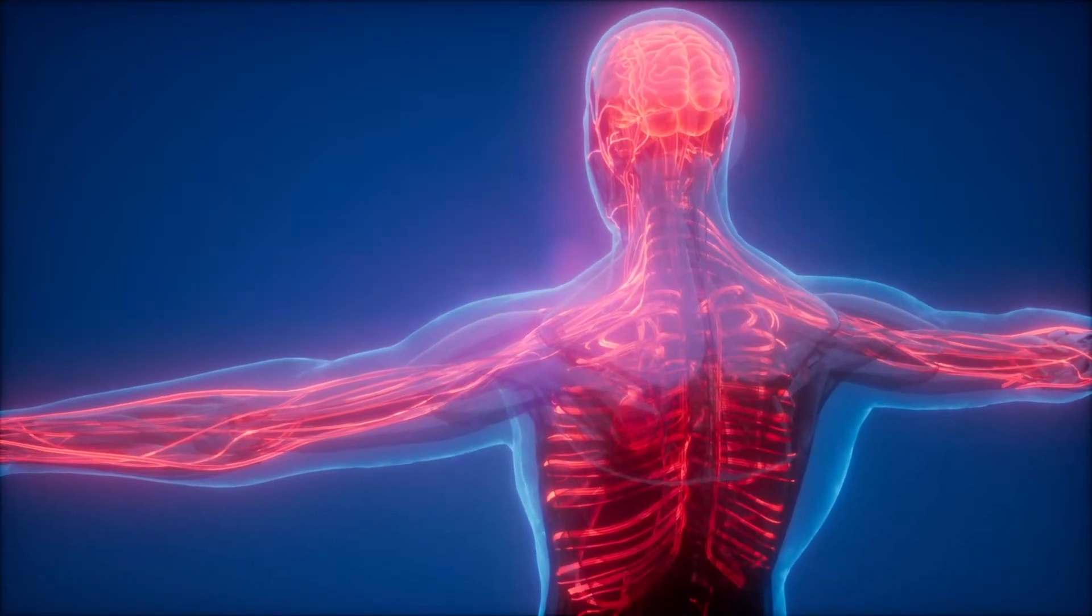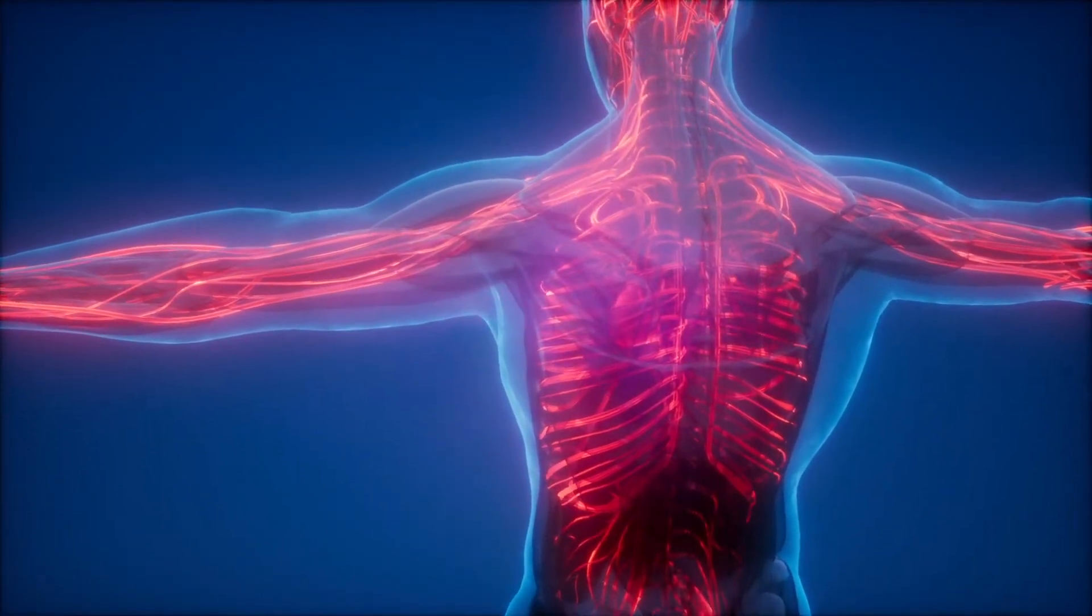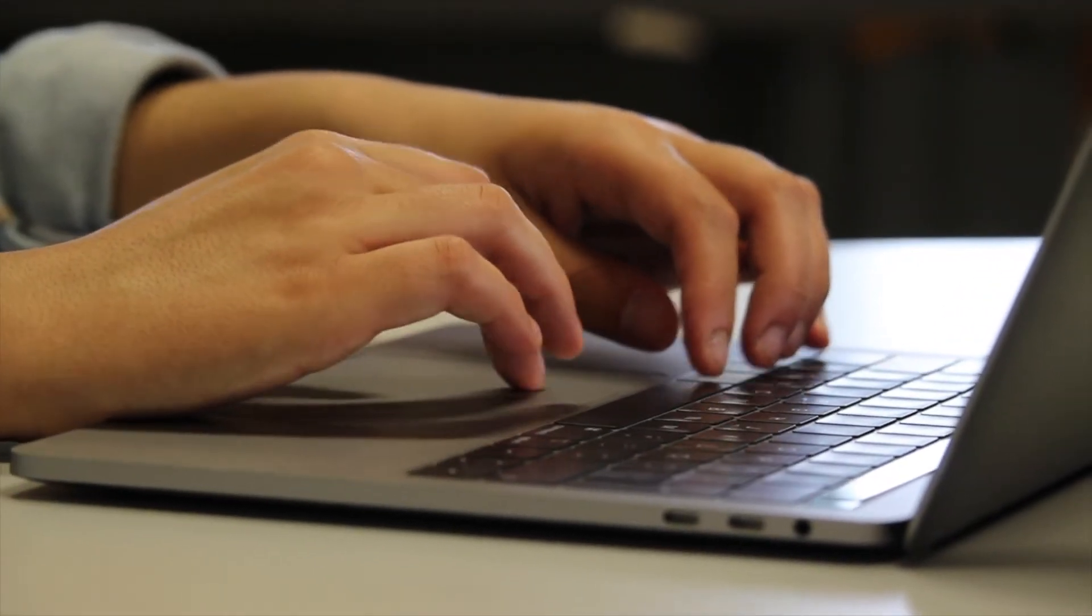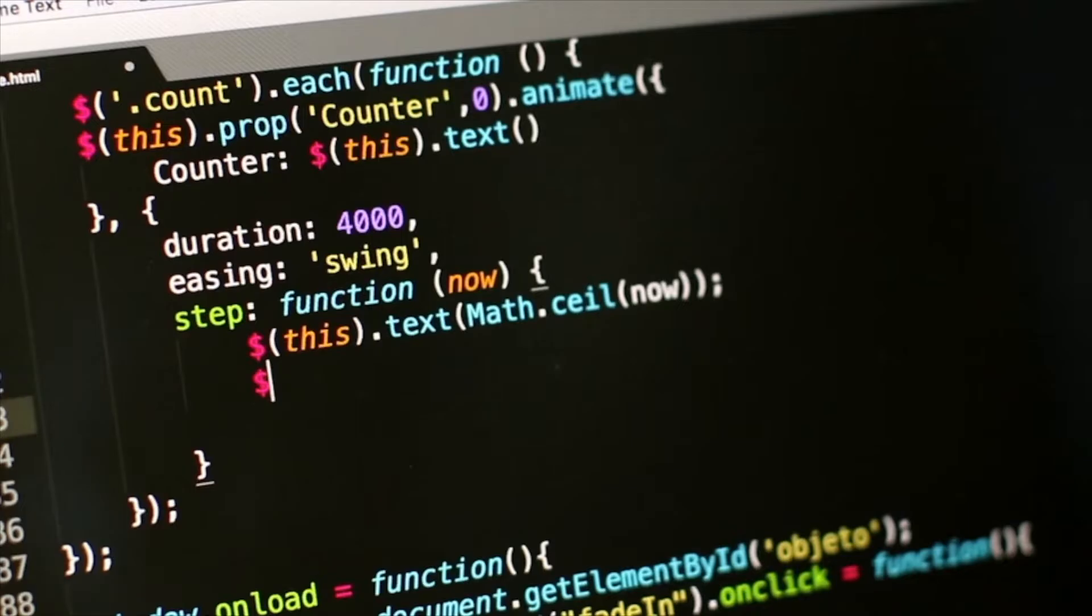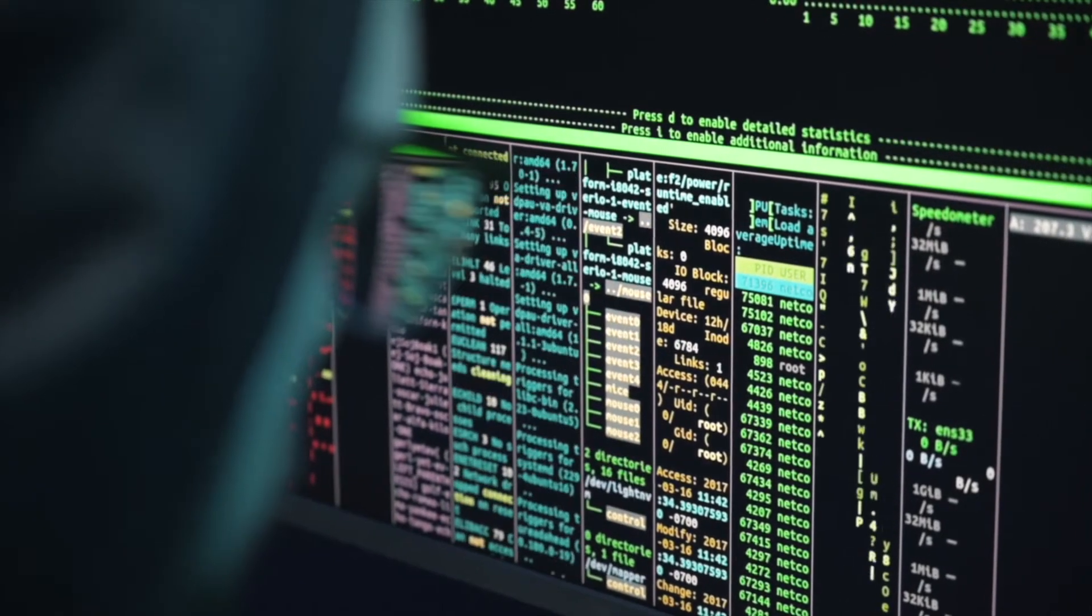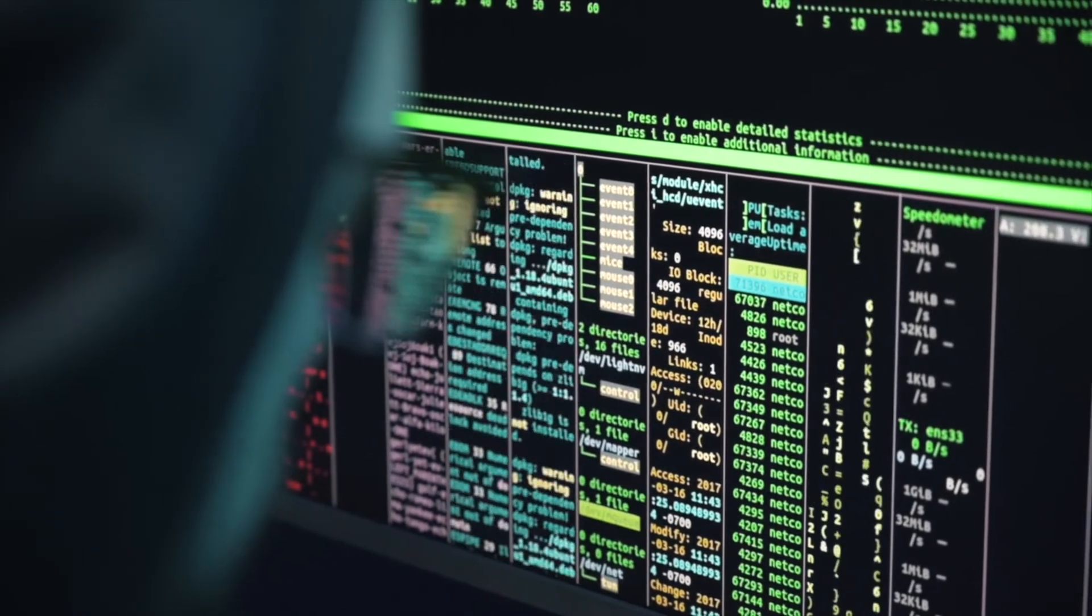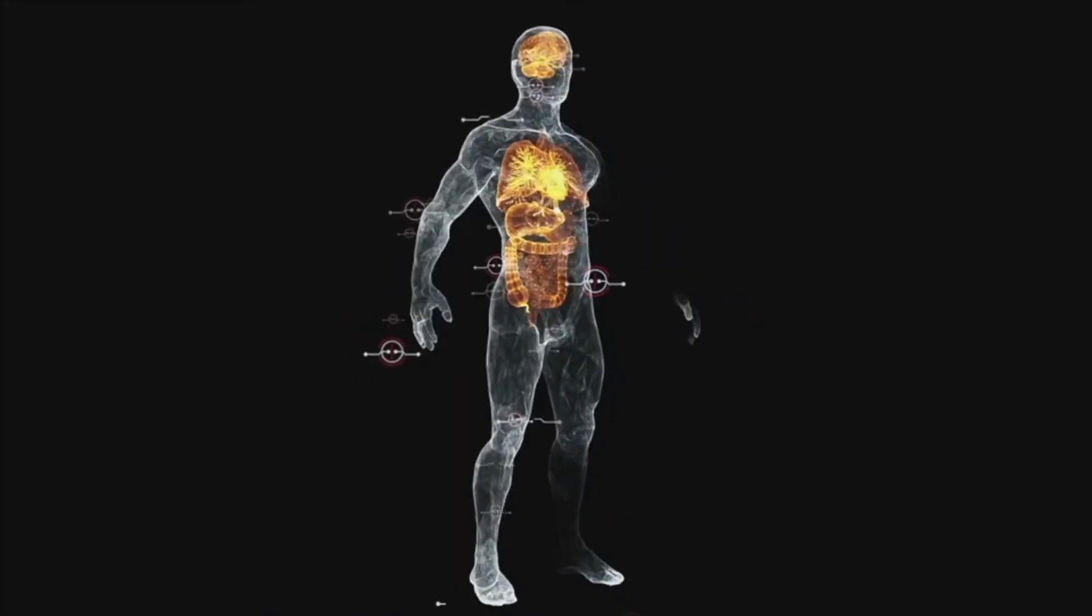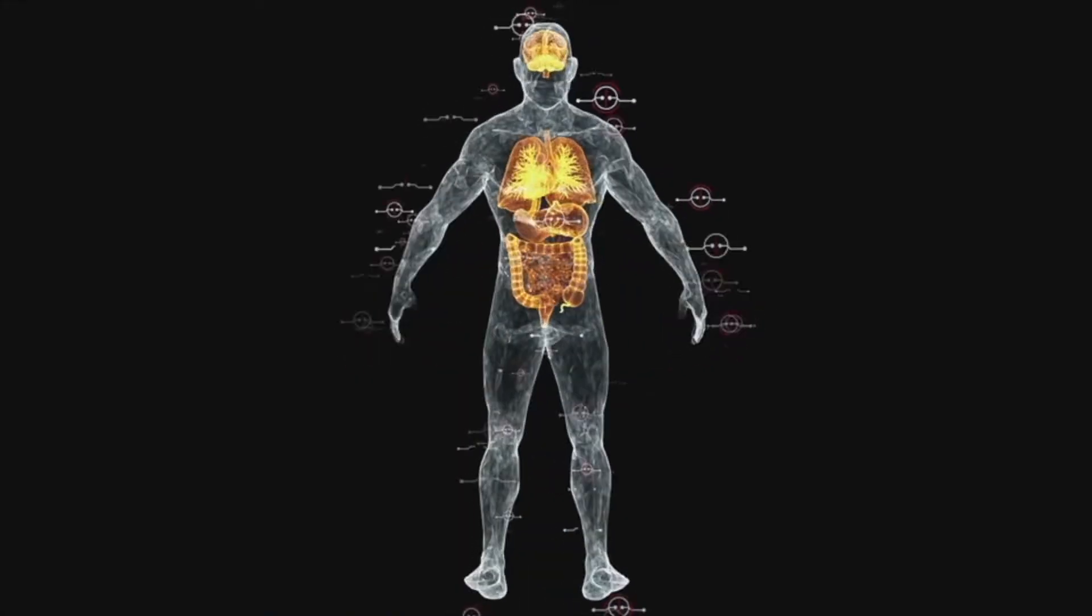Our bodies are more like computers than you may realize. Computers and other electronic devices like cell phones function by following a set of instructions called code. Computer engineers write code to tell devices exactly what to do and how to respond and behave. Our bodies follow a set of code as well.